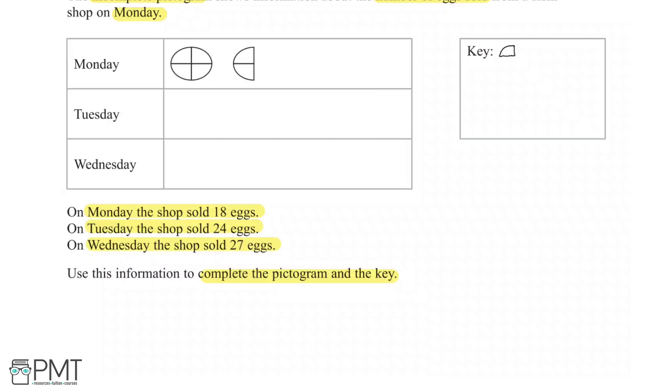Let's look at Monday. We have 18 eggs. Now let's count how many quarters we have: 1, 2, 3, 4, 5, 6. So we have 6 quarter ellipses equals 18 eggs. Now to get how much 1 quarter ellipse is, we divide both sides by 6. So 1 quarter ellipse equals 3 eggs. So this will equal 3 eggs.